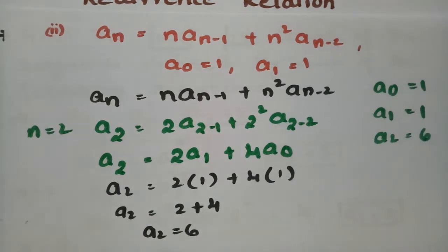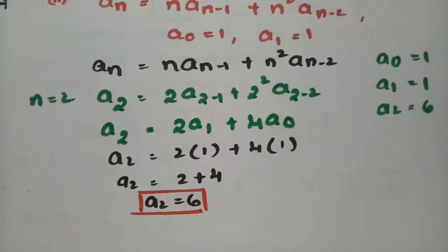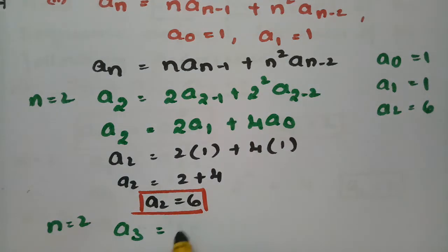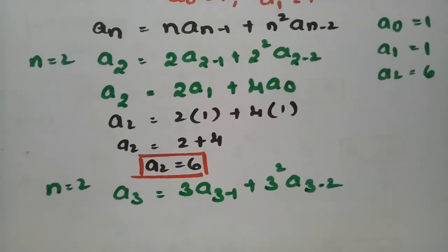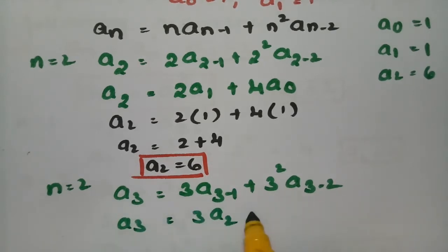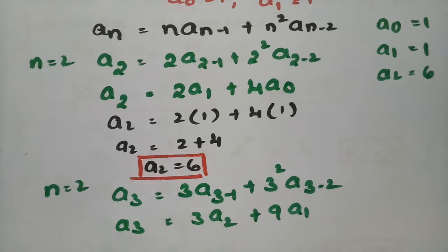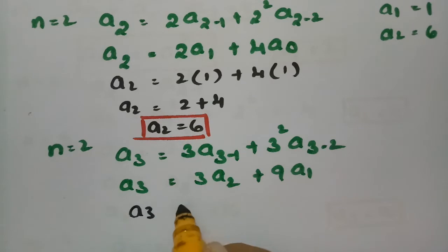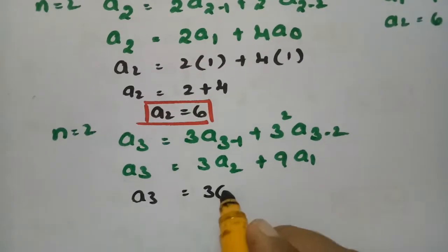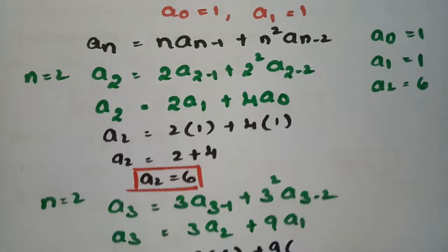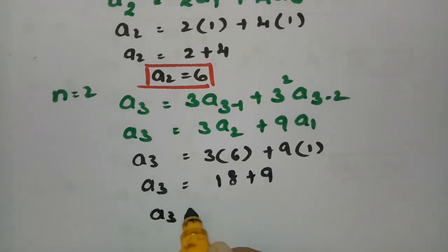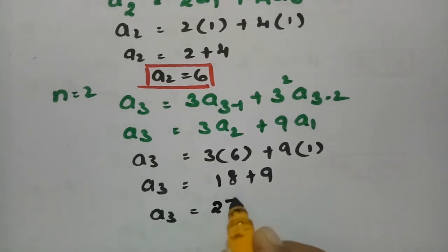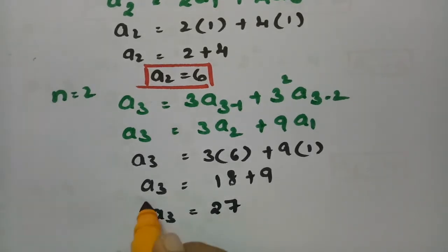After getting a_2, put n = 3. So a_3 = 3·a_2 + 9·a_1. Substituting: a_3 = 3×6 + 9×1 = 18 + 9 = 27. Therefore a_3 = 27.